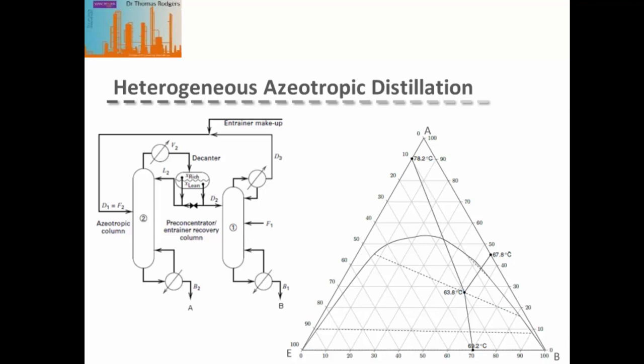On the left hand side we have a common two column system set up for heterogeneous azeotropic distillation, and you can see in this case that both of the columns have multiple feeds. But as it's difficult to draw columns with multiple feeds on the ternary diagrams, we can actually split this up into mixing points before the column and then columns with a single feed.